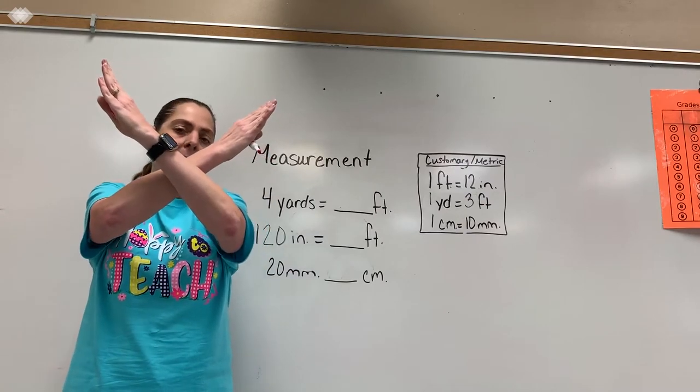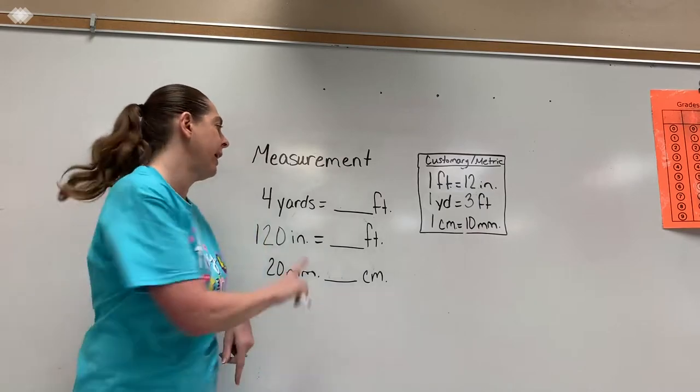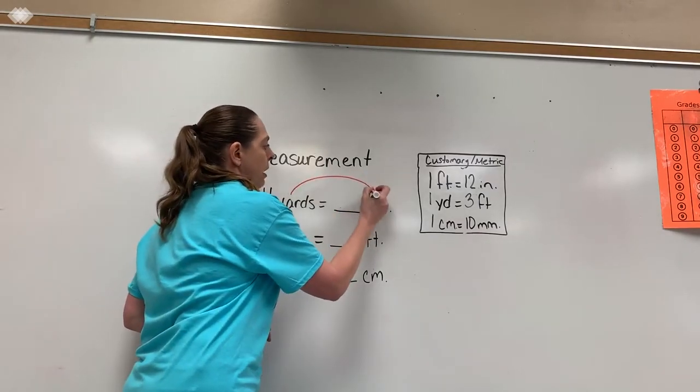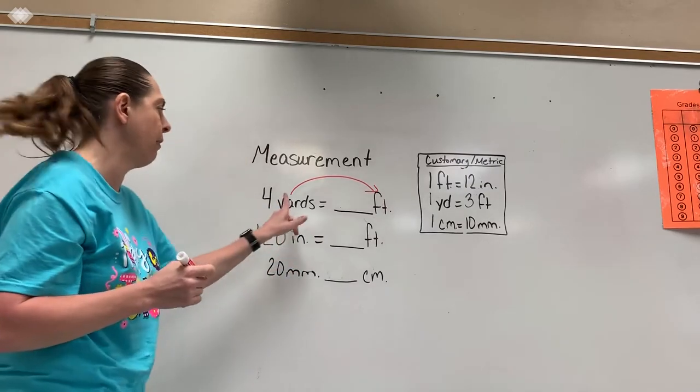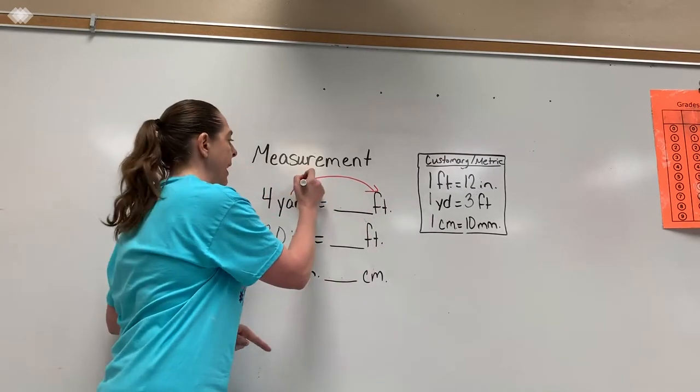And then whenever I do my hands like this, it looks like a multiplication sign. So that tells me I have to multiply to get to the smaller unit of measurement. So I'm going to draw this arrow here telling myself from here to here, I'm going to go to a smaller unit of measurement and I'm going to multiply.